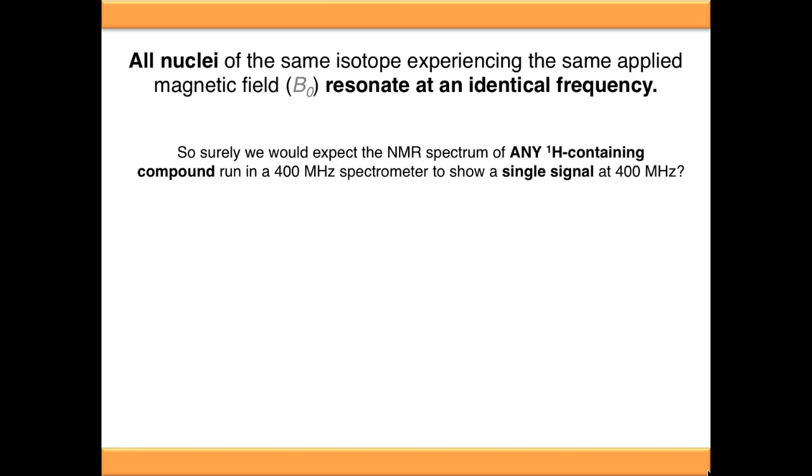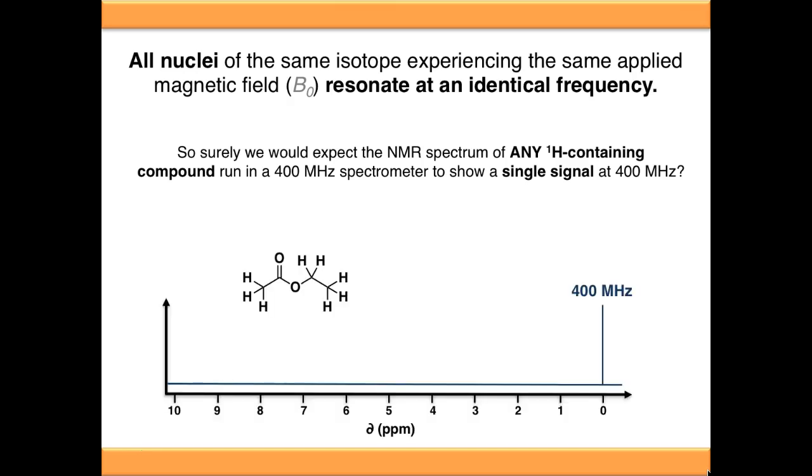You would expect if you run an NMR spectrum of any compound, in this case ethyl acetate, as long as it contains protons it should give you a single signal at the resonance frequency. So if you run it in a 400 MHz spectrometer, it would show up at 400 MHz.